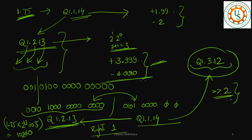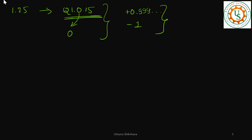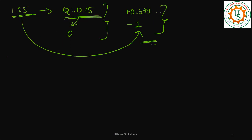Can I represent 1.25 in Q1.0.15? This format has zero integer bits, meaning there is no integer part. The range is plus 0.9999 to minus 1. Since 1.25 doesn't come within this range, we definitely cannot convert or represent 1.25 in Q1.0.15 format.